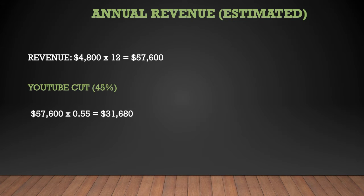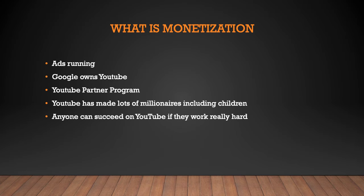Annual revenue — this is an estimate — is $4,800 multiplied by 12, which gives you $57,600. Now YouTube gets a cut: YouTube takes 45% and the channel keeps 55%. So you multiply $57,600 by 0.55 and you get $31,680.